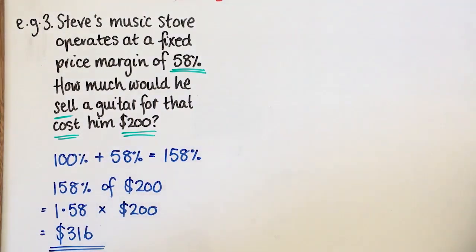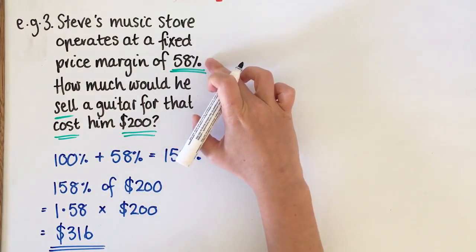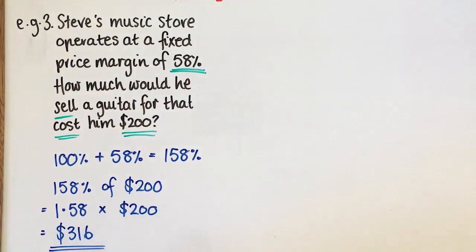So Steve buys the guitar for $200, sells it in the shop for 58% more, and the price of that guitar is $316 for the customer.